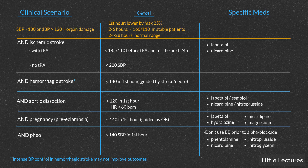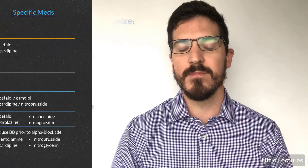Pheochromocytoma is the fourth special scenario: headaches, palpitations, and intermittent severe hypertension. You want to alpha-blockade first, then beta-blockade, with a goal of less than 140 in the first hour. Outside of these four parameters, follow the regular algorithm.